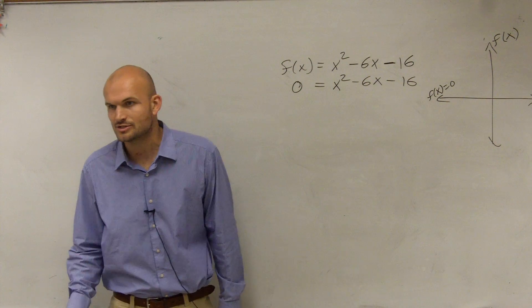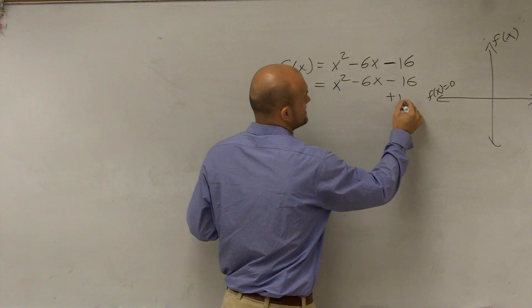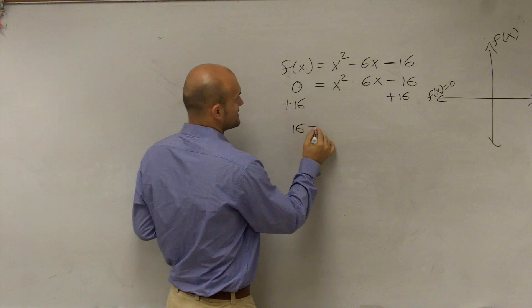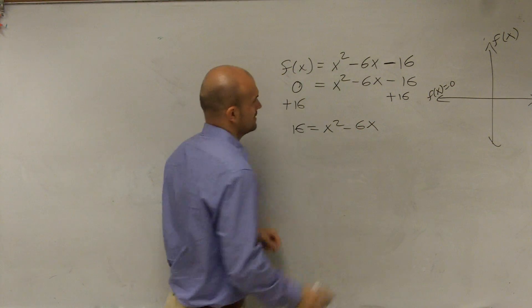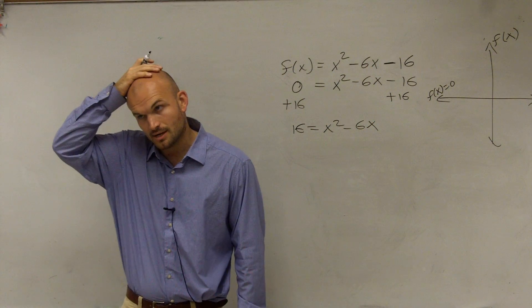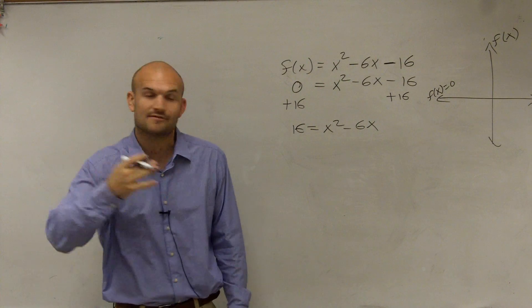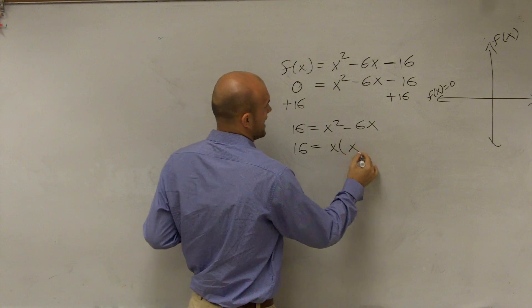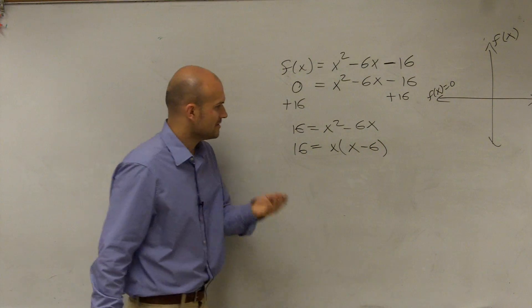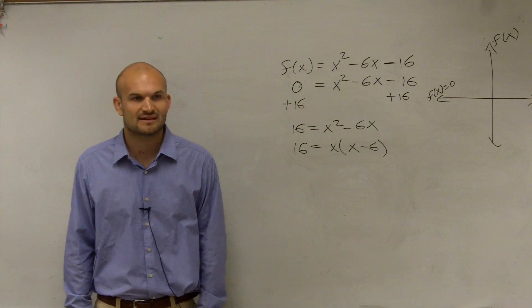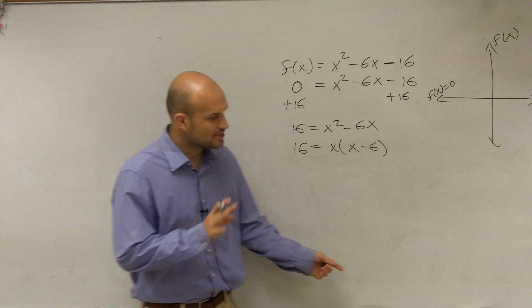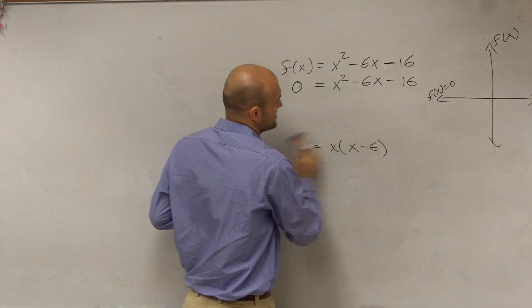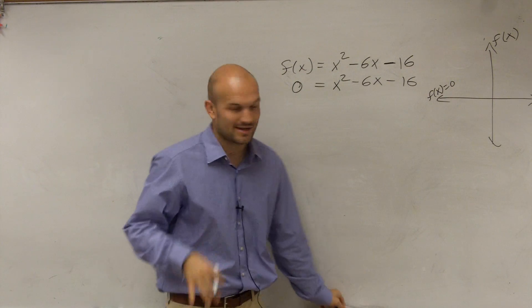Here's what almost all students do when they're confused — they add 16 to the other side, because that's what they're used to. So they get 16 equals x squared minus 6x. Then they think they need to factor, so they factor out an x and get x times (x minus 6). This is all wrong, by the way. I've seen it way too many times, so I had to point it out.